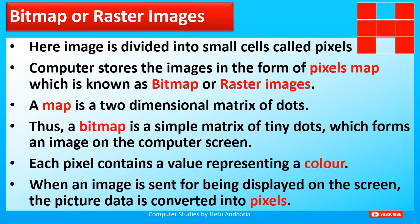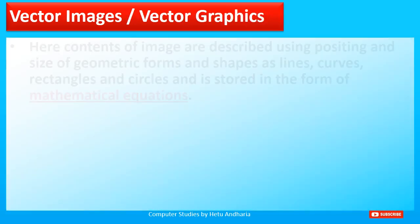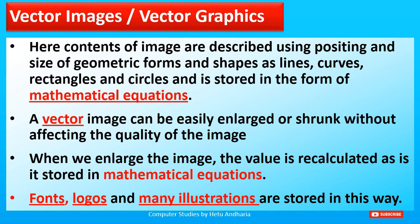Each pixel contains a value representing a color. For example, to display the alphabet H, we used red color. When an image is sent to be displayed on screen, the picture data — that is, the color — is converted into pixels. Another form of image generated by computers is vector graphics, where the contents of the image are described using the positioning and size of geometrical forms such as lines, curves, rectangles, and circles.